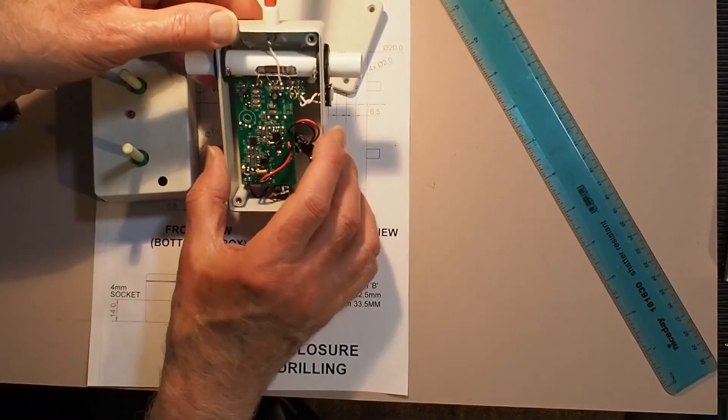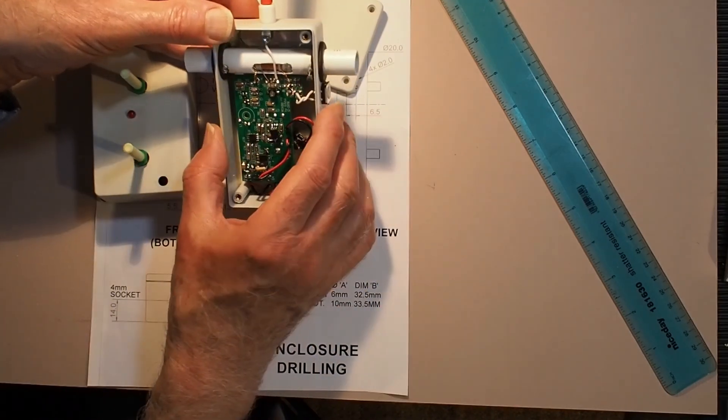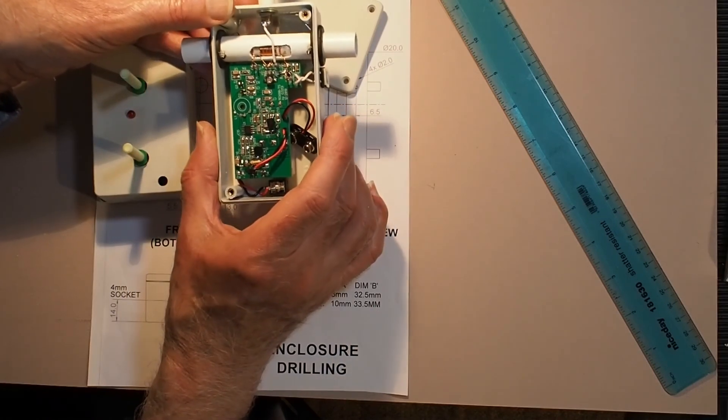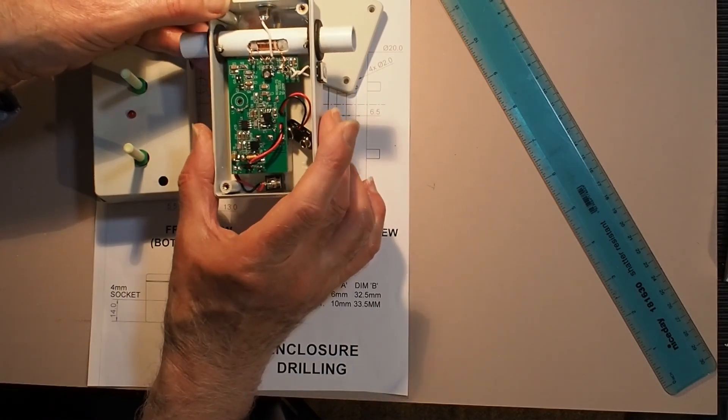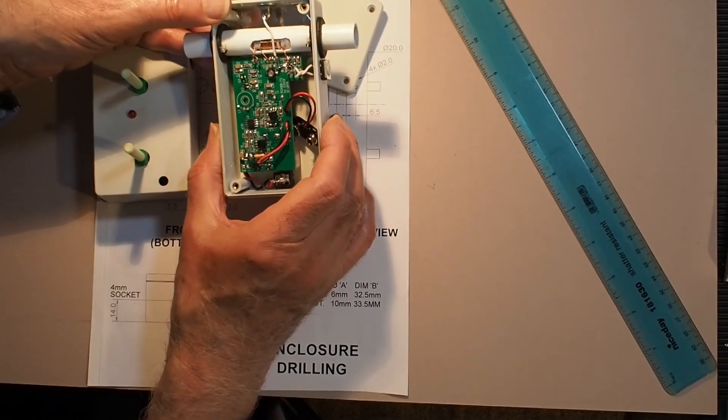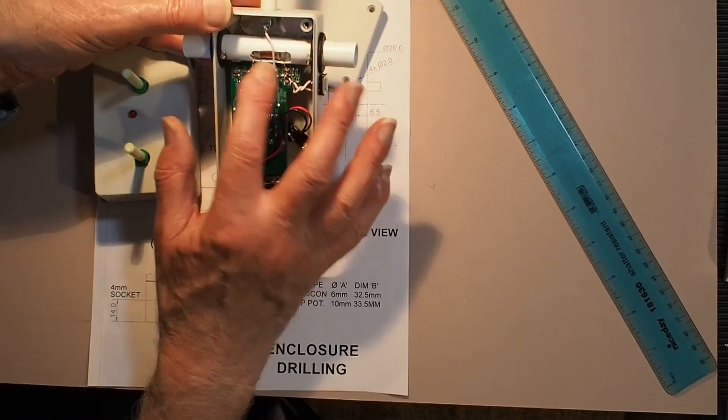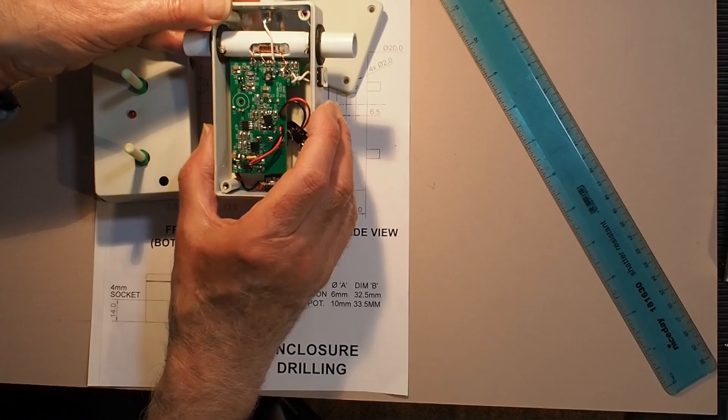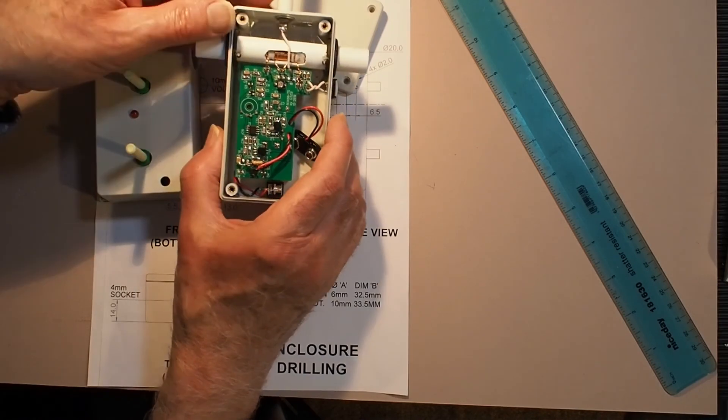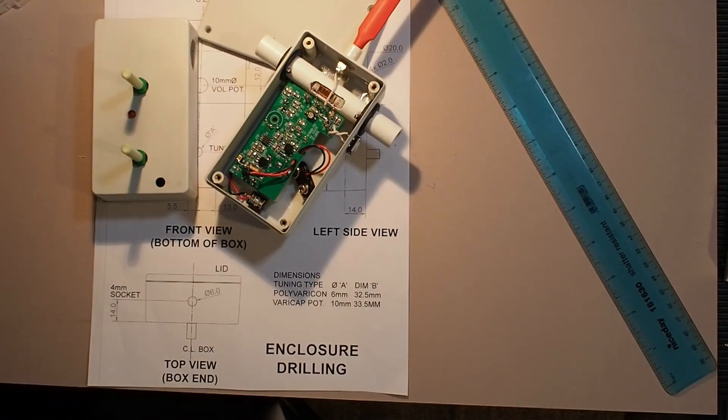What I'll do in a separate video is show you how to assemble this ferrite rod tube and wind the coils. It won't be like this - this was just a prototype, but I've got a much better method of winding that coil. So take a look at that when it's been posted. Until then, thanks and bye for now.